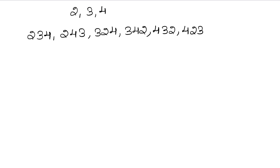When we build numbers, we only change the arrangement of digits. We always keep in mind that we put each digit in a place only once — we don't put the same digit again. So just one number goes in each place.